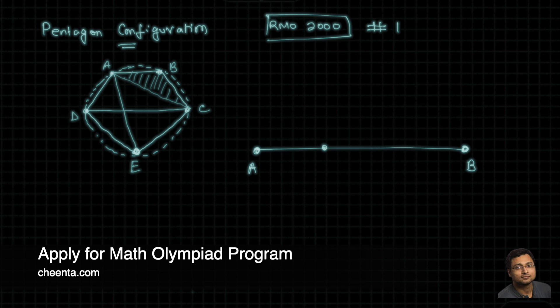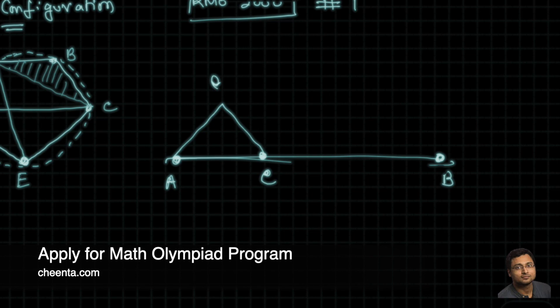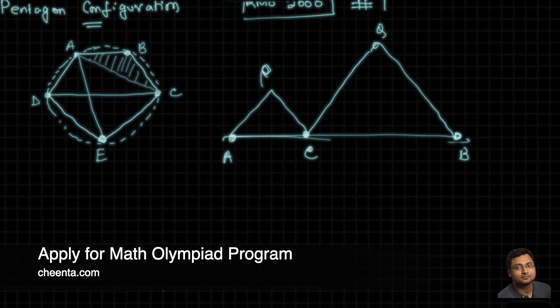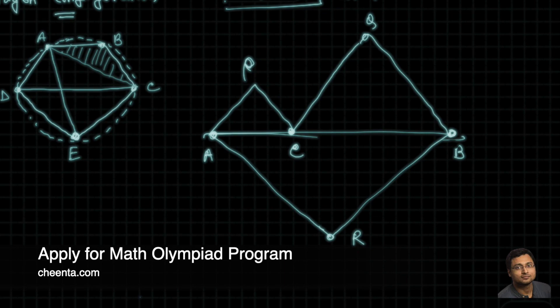So AB is a straight line segment and C is a point between A and B. And we draw triangles APC, BQC and ARC.